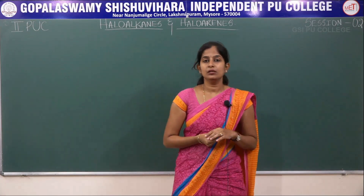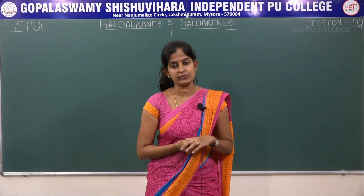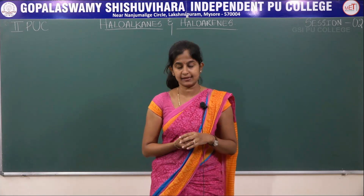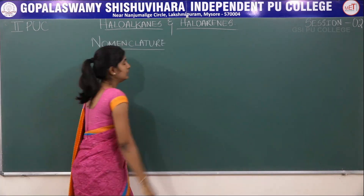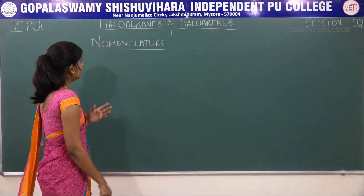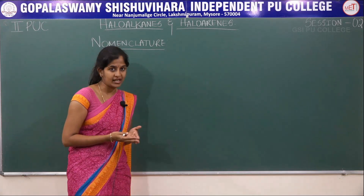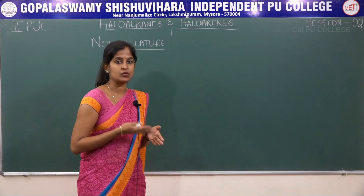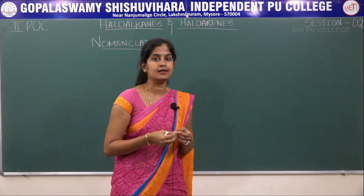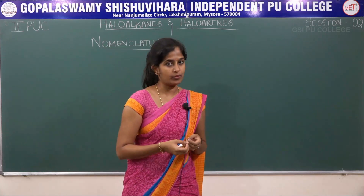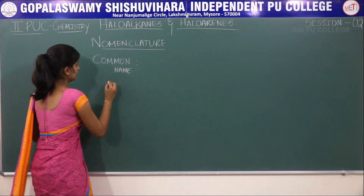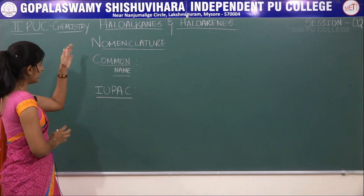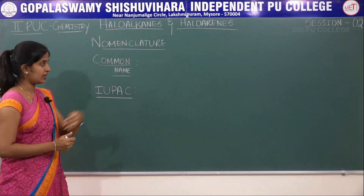In this session we will be discussing the nomenclature of haloalkanes and haloarenes, as well as the nature of carbon-halogen bonds in halo compounds. The first topic is nomenclature of haloalkanes and haloarenes. Nomenclature is of two types: common names, which are usually derived from the source of the compound, and IUPAC accepted names, which follow certain rules.